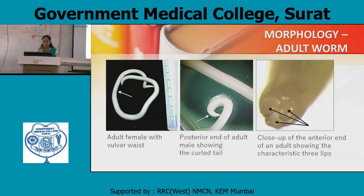Morphology of Ascaris lumbricoides: we can see the adult female with a vulvar waist. The second figure shows the posterior end of the adult male with a curled tail. The third figure is a close-up of the anterior end of an adult showing the characteristic three lips.